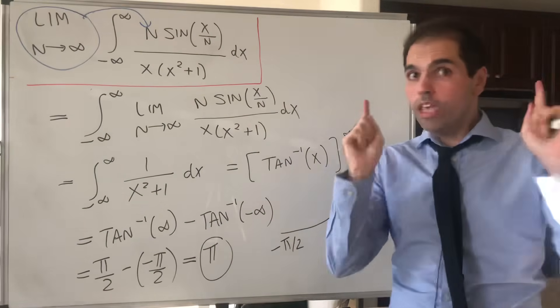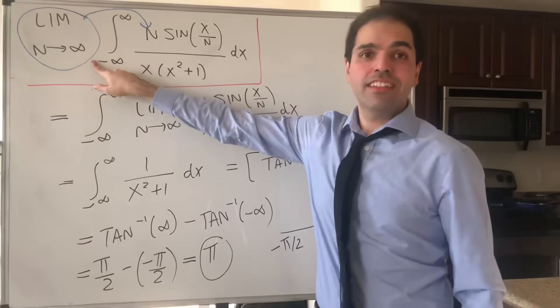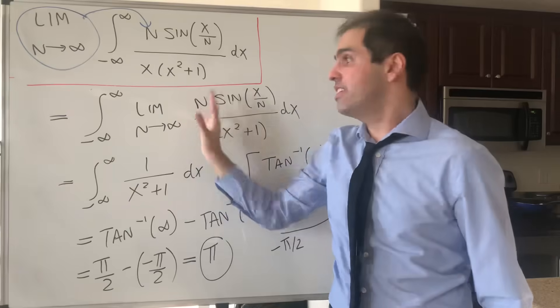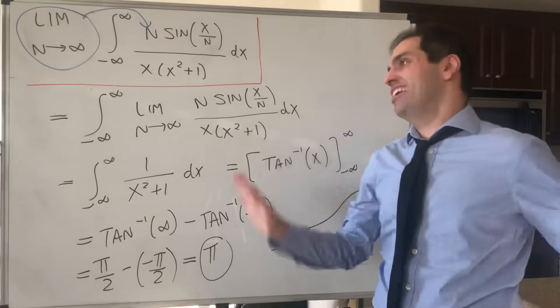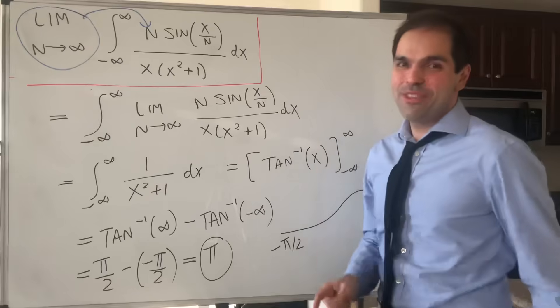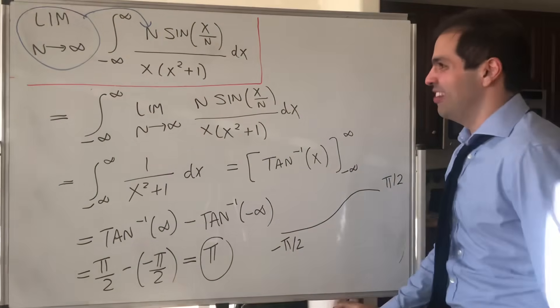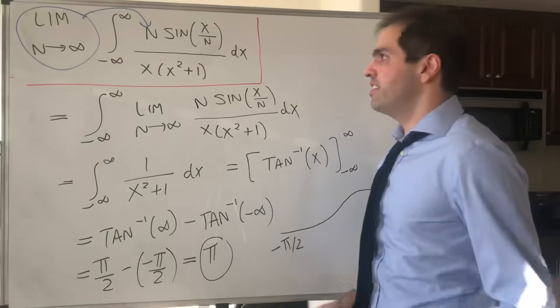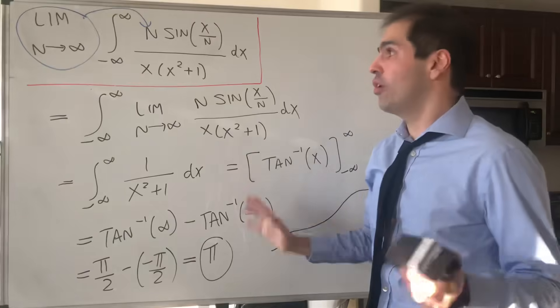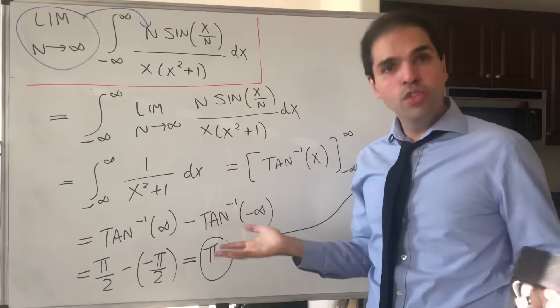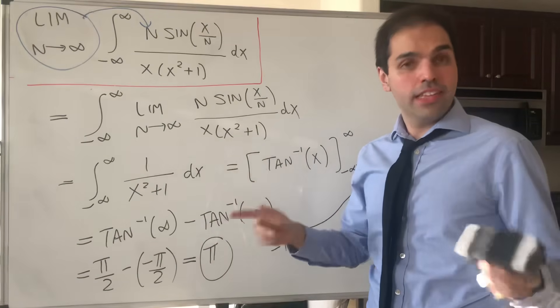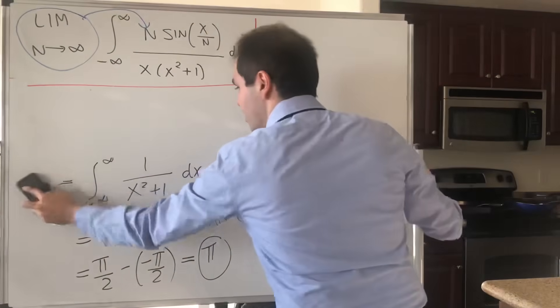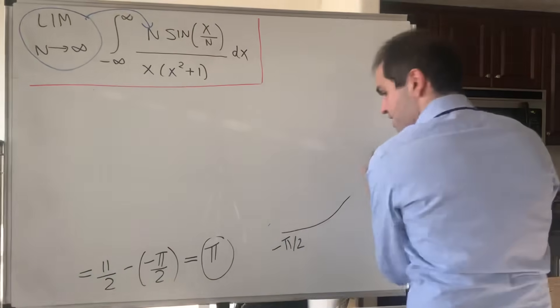Now, we would be done, provided we can justify the fact that we can put the limit inside the integral. So for some people you're done, but if you're a pure mathematician, wait for it. The question is, when can you put the limit inside the integral? It turns out there's a beautiful theorem that gives you a very elegant way of doing this. And there's another video I've done on this. And that's called the dominated convergence theorem.